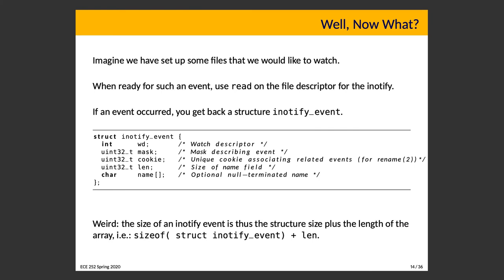The cookie is used to associate related events, mostly for rename. If you rename a file, that's reported as two different events: the old file goes away and the new file is created. The cookie links those two together. So if you're watching a folder and you see a deletion and an addition with the same cookie value, it means that was a renaming, not that a file was deleted and a new one created. It's one strategy for linking the two events together.